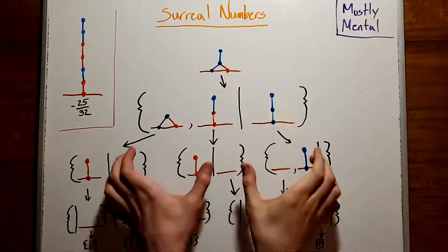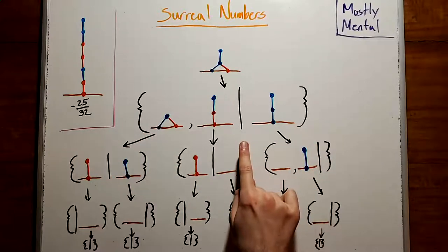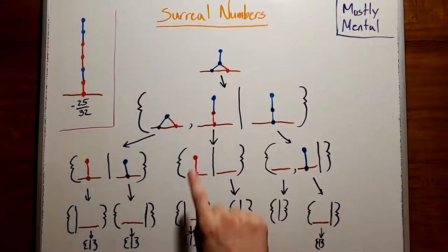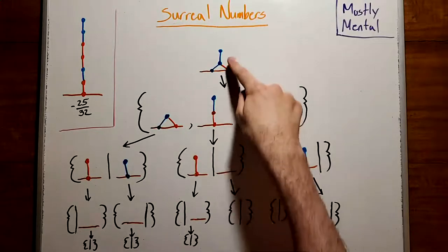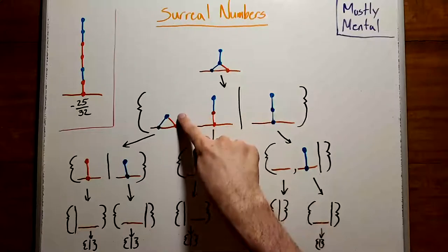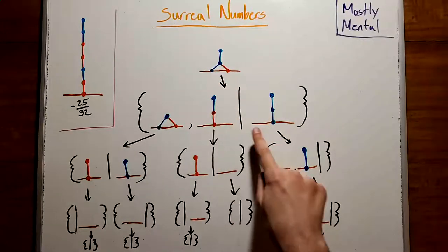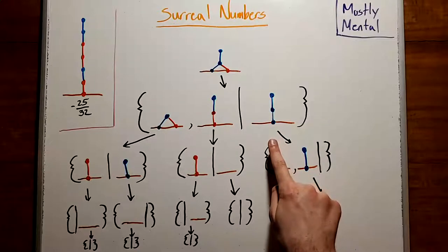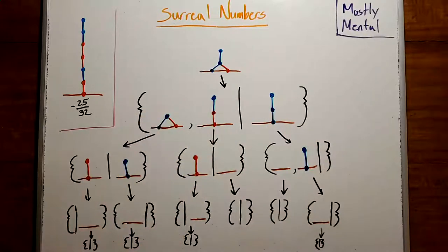We'll write a position as a pair of sets, in brackets separated by a vertical bar. On the left, we'll write all the positions that blue can move to. So if blue cuts this top edge, we end up here. And if she cuts this bottom edge, we end up here. And on the right, we'll write all the positions that red can move to. And then, we can repeat this process, expanding each of these out recursively, until we get to positions at the bottom, where there are no possible moves.